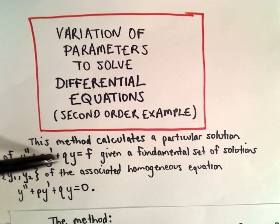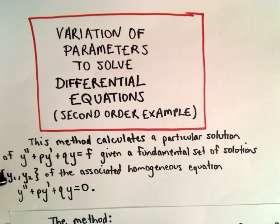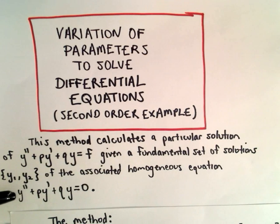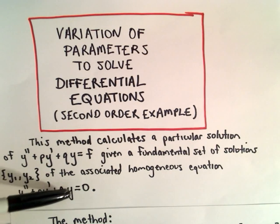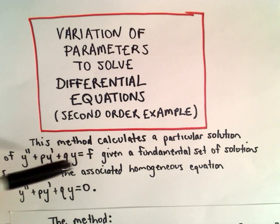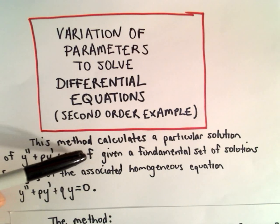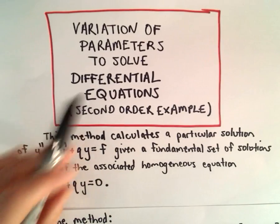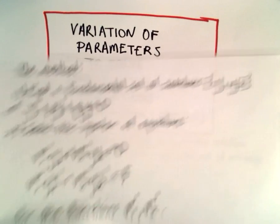These are all just functions of x. Given a fundamental set of solutions y₁ and y₂ of the associated homogeneous equation y'' + p·y' + q·y = 0 — we're just taking the original equation, and instead of having the function f(x) on the right, we're just going to have zero.